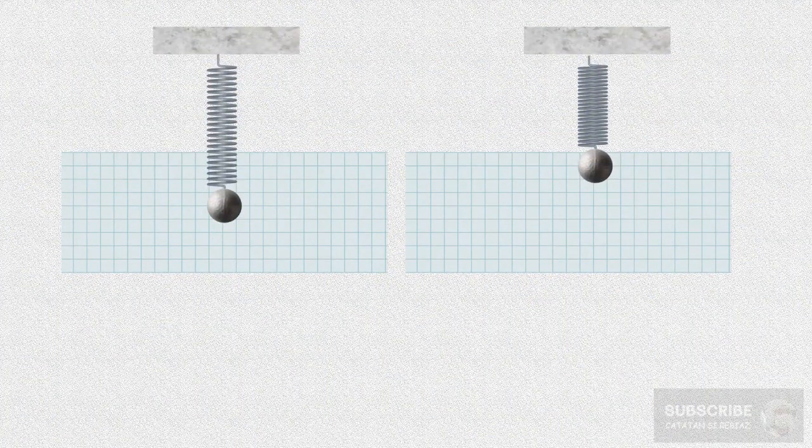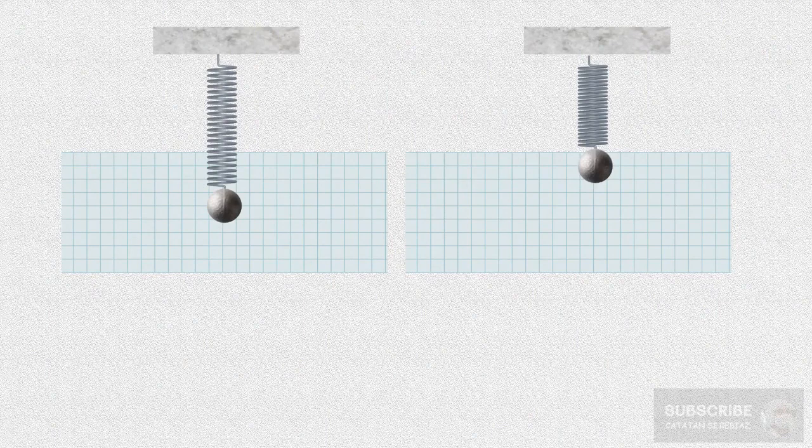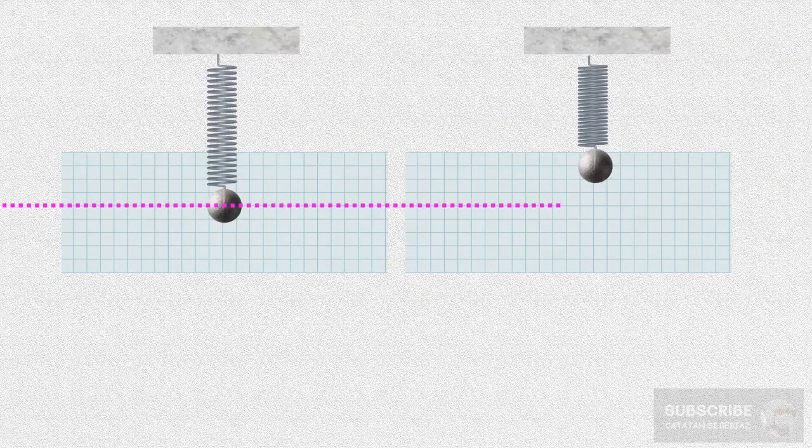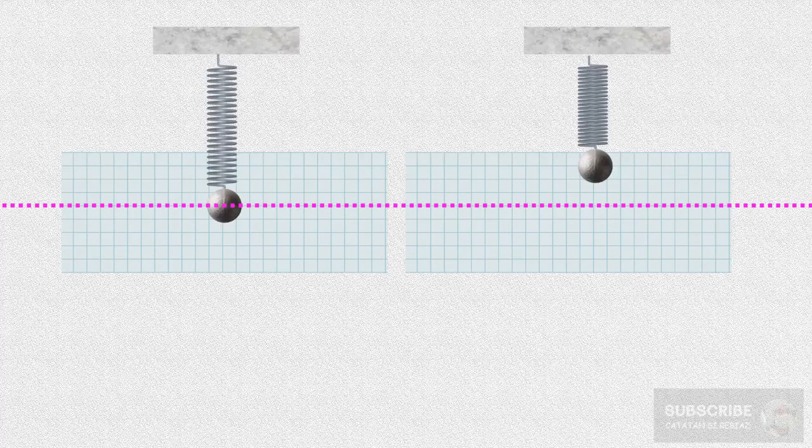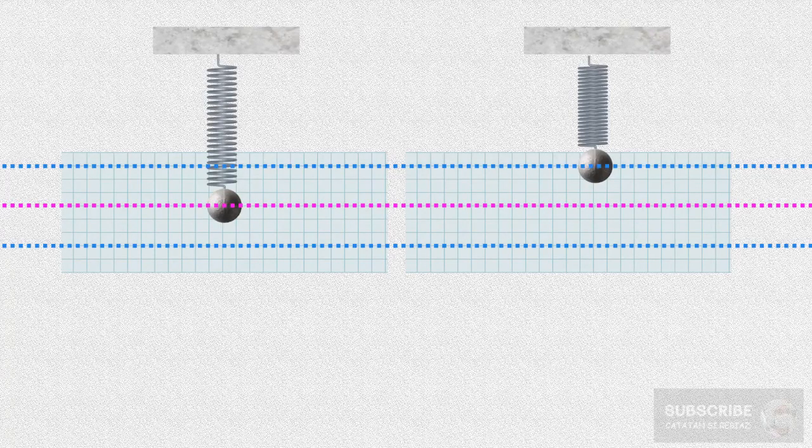Here is the spring ball system. On the left, initially, the ball is at equilibrium point. On the right, initially, the ball is at the maximum displacement point.